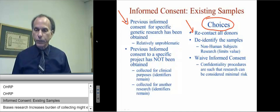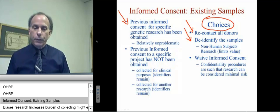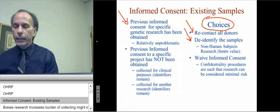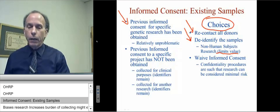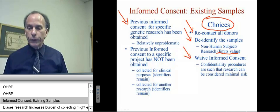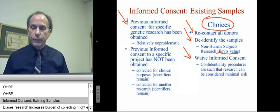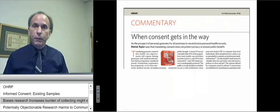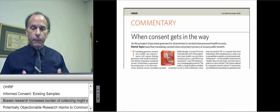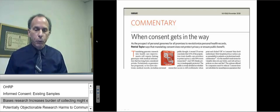What are the choices available in order to do this research? One, the IRB could request investigators to recontact all donors to obtain informed consent. Second, the IRB could say the samples need to be de-identified, in which one is now doing non-human-subject research and informed consent could be waived — however, that limits the value of the research. Or three, the IRB could sanction a waiver of informed consent with confidentiality procedures instituted such that the research could be considered minimal risk. The whole issue of waiver of informed consent is discussed in a previously distributed paper, 'When Consent Gets in the Way.'